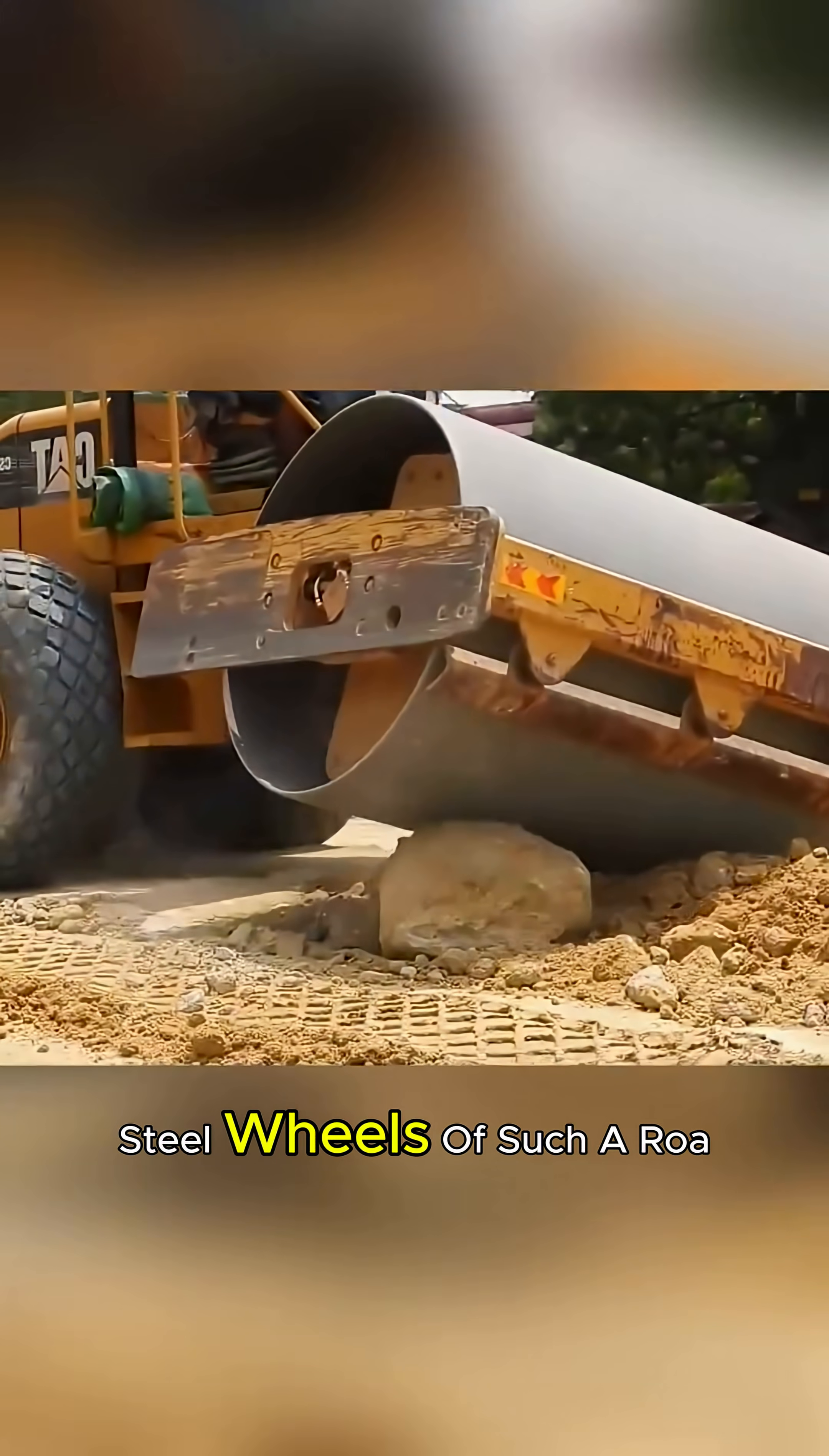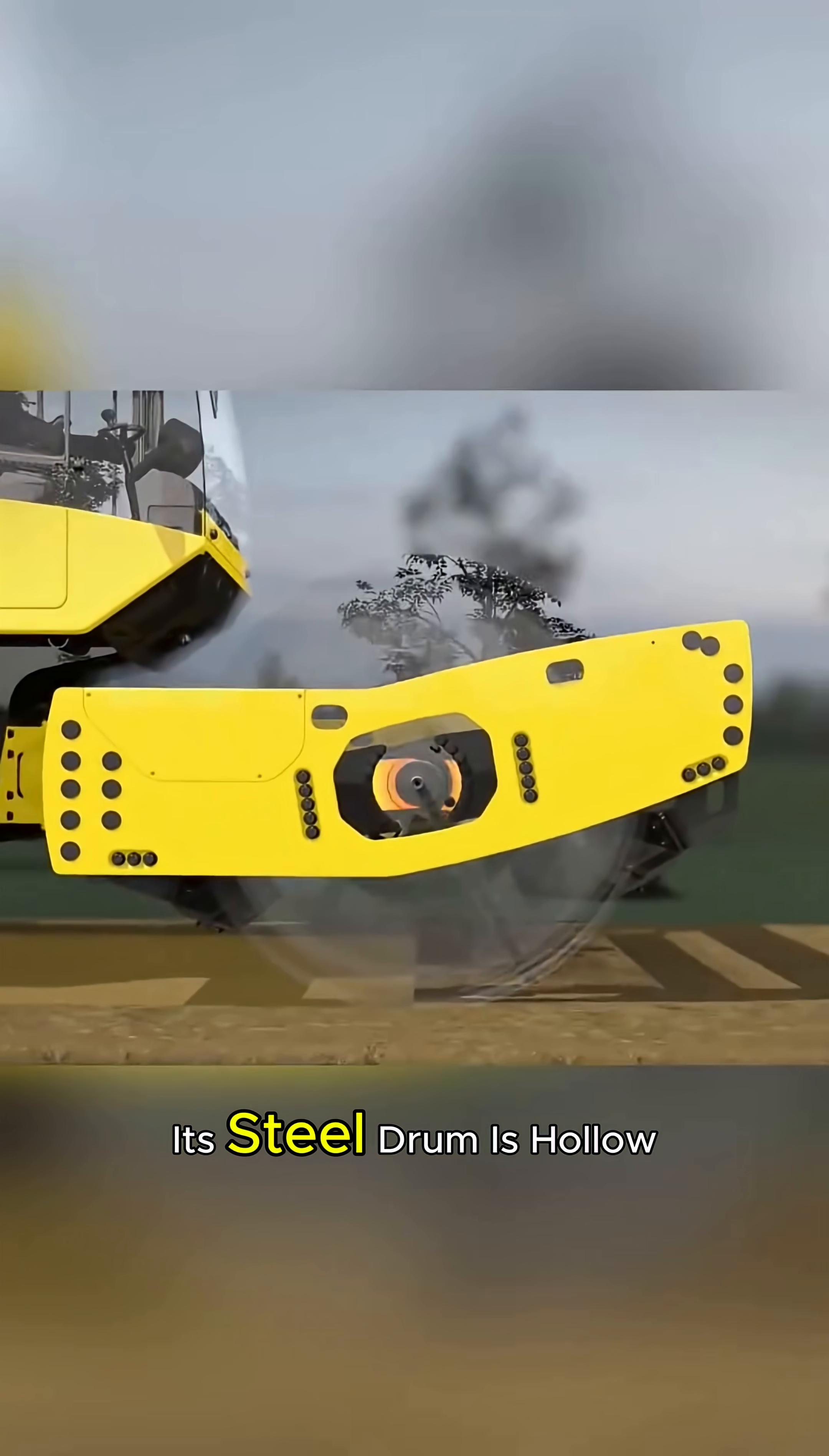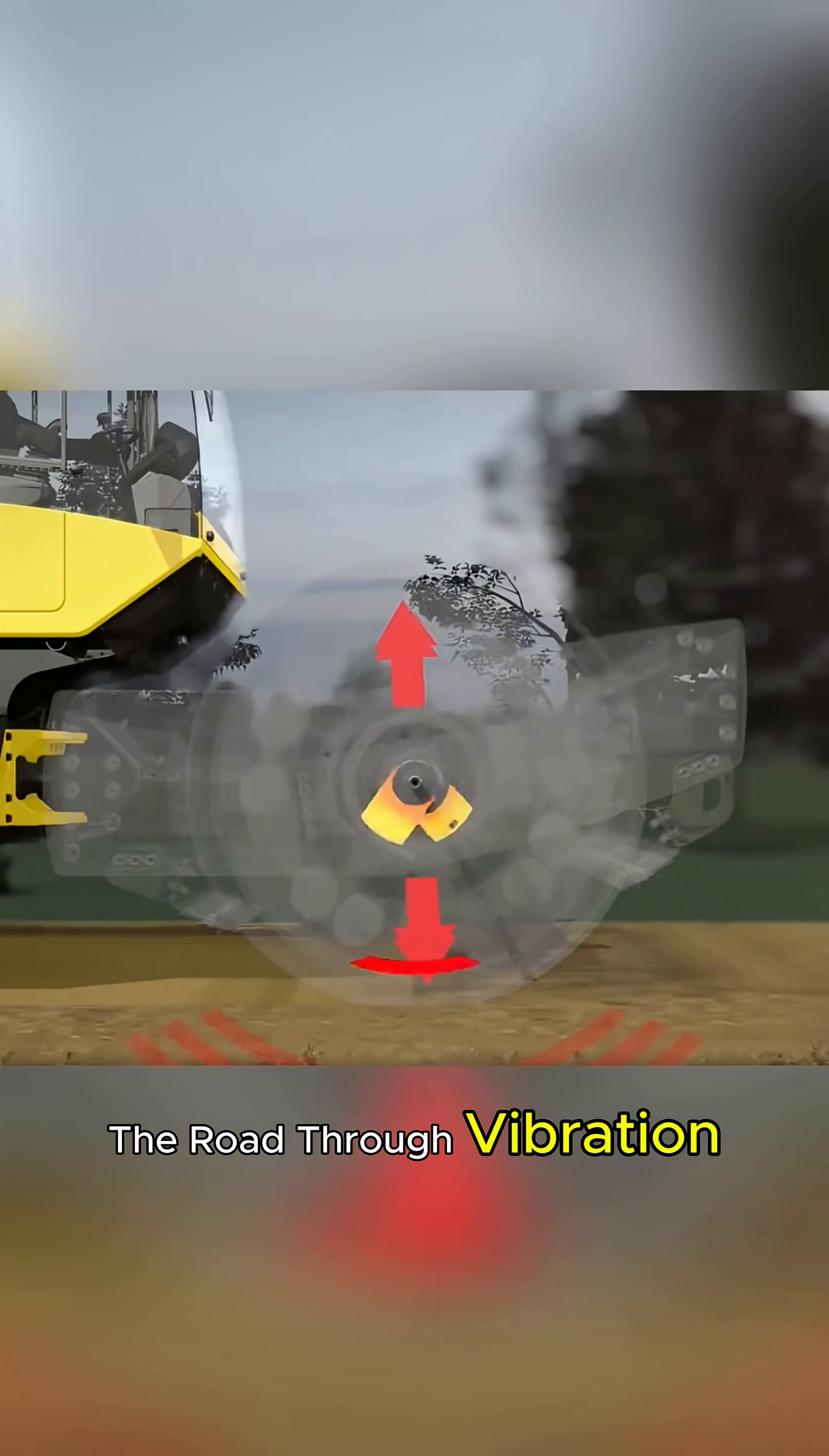I always thought that the big steel wheels of a road roller are solid drums, but I was wrong. Actually, its steel drum is hollow inside, and it presses the road through vibration.